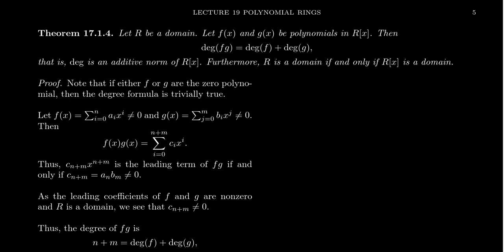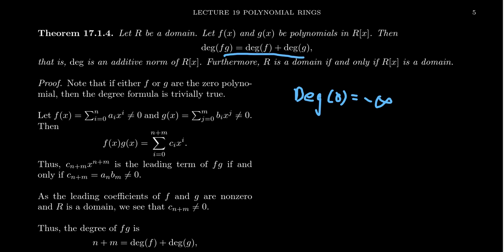It doesn't necessarily have to be a commutative domain, also known as an integral domain; commutativity is not going to be used here. Note that if either f or g is the zero polynomial, we defined the degree of the zero polynomial to be negative infinity. If you take negative infinity plus negative infinity, that's negative infinity; negative infinity plus a natural number is also negative infinity. So if one of the polynomials is zero, the formula is trivially true because of how negative infinity interacts with things.